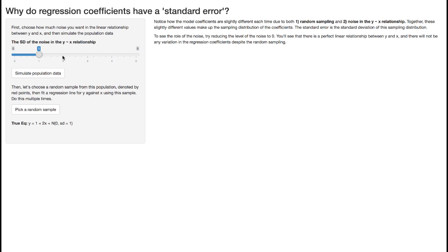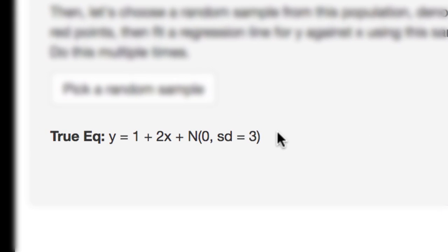So first of all I'm just going to set up the population data by clicking this button. So essentially what this is doing is it's creating a population of data that involves two random variables that have a set kind of relationship, and the relationship between those variables is expressed down here as a linear model.